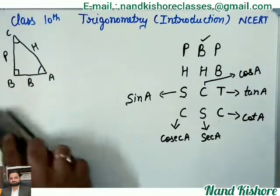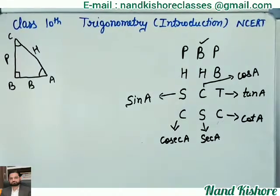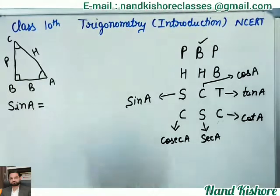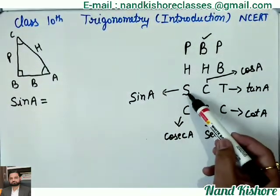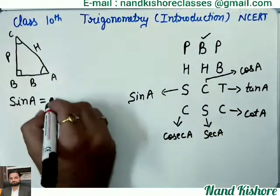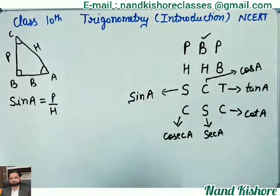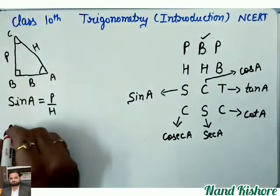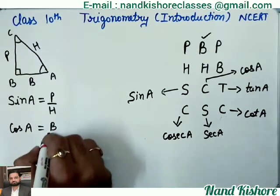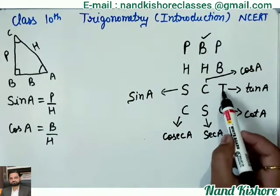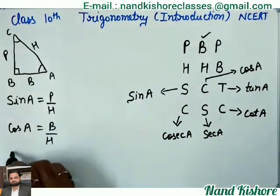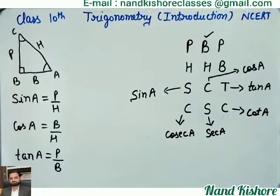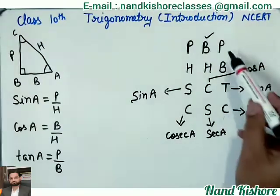Why have we learnt this pattern? It will make the concept very easy. The value of sine A will be given by P upon H — sine means P upon H. Cos means B upon H. And tangent means P upon B. So: sine = P/H, cos = B/H, and tangent = P/B.